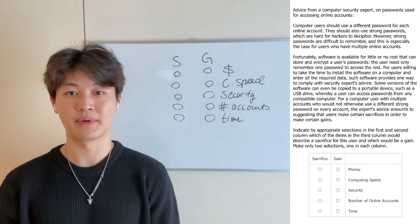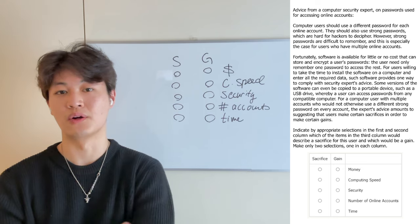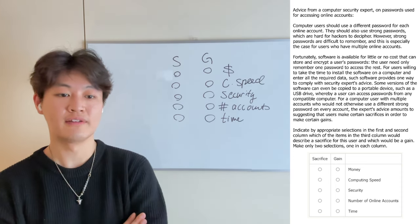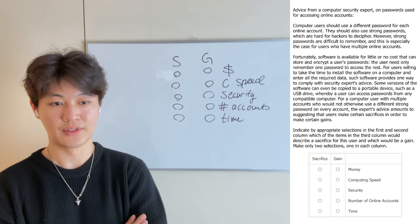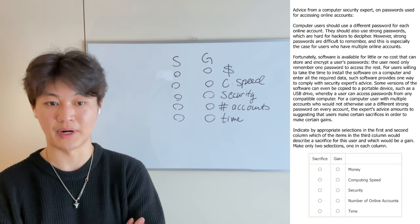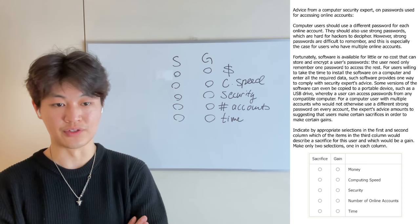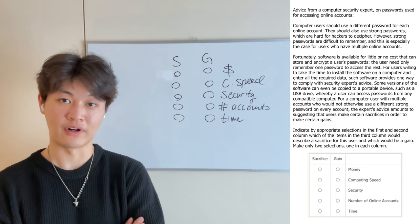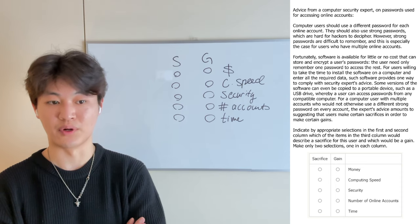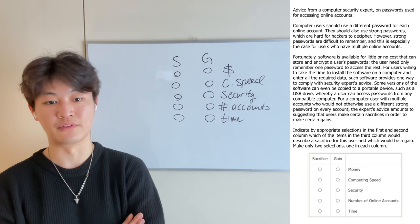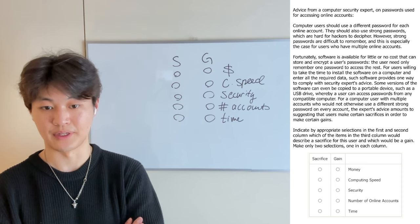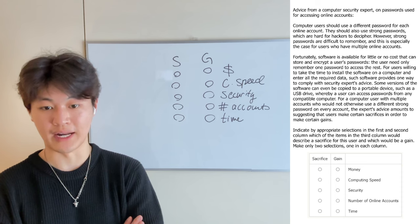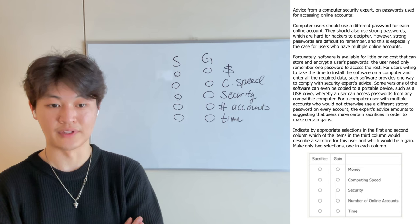Welcome back. We have a bit of a passage here, which isn't quite as long as a reading comprehension passage, but seems a bit longer than our standard critical reasoning question. From that, we have to answer a two-part analysis question on some facts about the passage. This is advice from a computer security expert on passwords used for accessing online accounts. Computer users should use a different password for each online account. They should also use strong passwords, which are hard for hackers to decipher. However, strong passwords are difficult to remember, especially for users who have multiple online accounts. Fortunately, software is available for little or no cost that can store and encrypt a user's password — the user need only remember one password to access the rest. For users willing to take the time to install the software on a computer and enter all the required data, such software provides one way to comply with the security expert's advice.